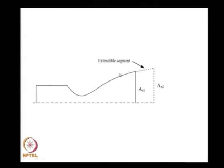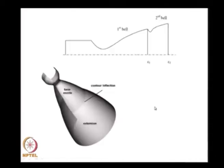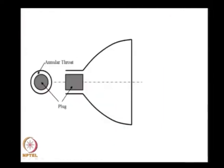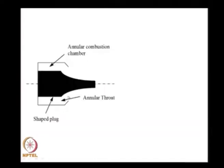This is the extendable segment: initially I have a small area ratio corresponding to AE₁, I store the extension on top, and when I want to fly at higher altitude I push it out to get a larger area ratio. This is the dual bell nozzle — you can see the step in the contour profile which makes it adaptable to different altitudes. There is a recent AIAA paper on this which those interested should read. This is the plug nozzle — I put a plug here with an outer surface guiding the flow while the inner surface is free to adapt, using an annular throat instead of a circular one.